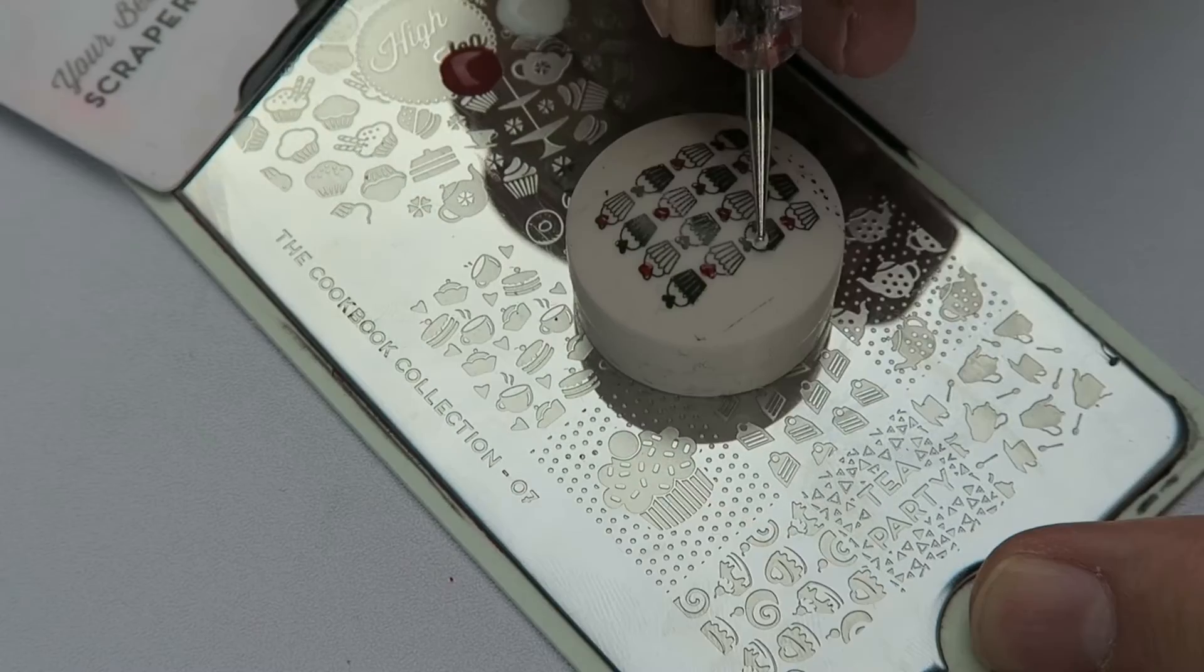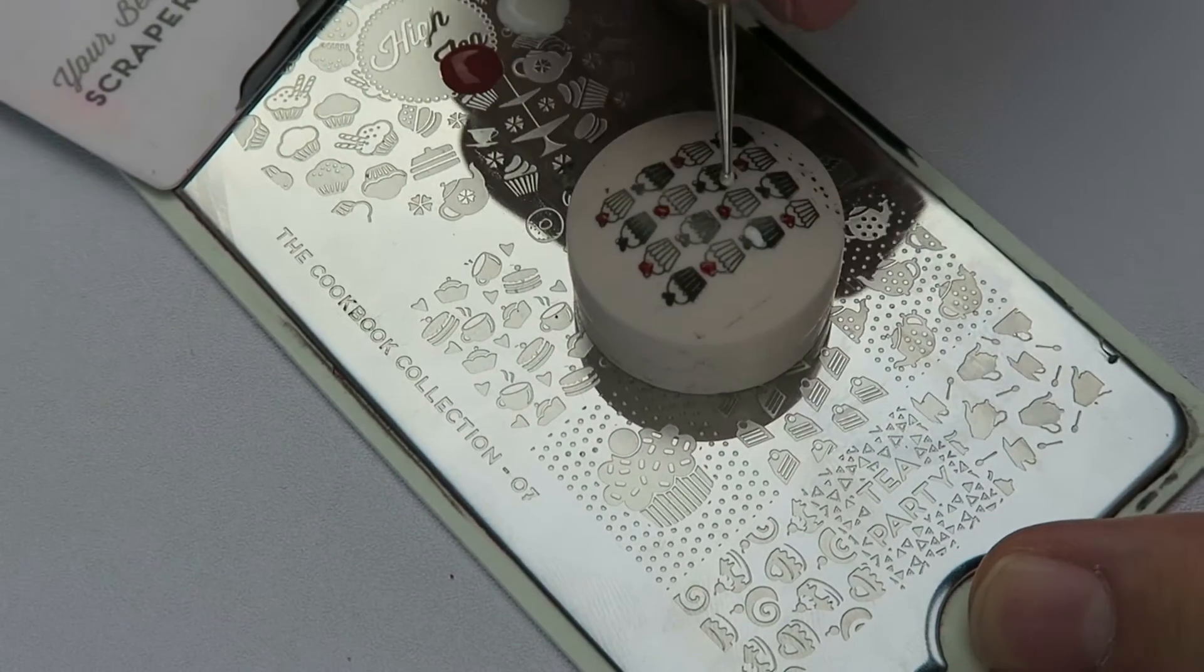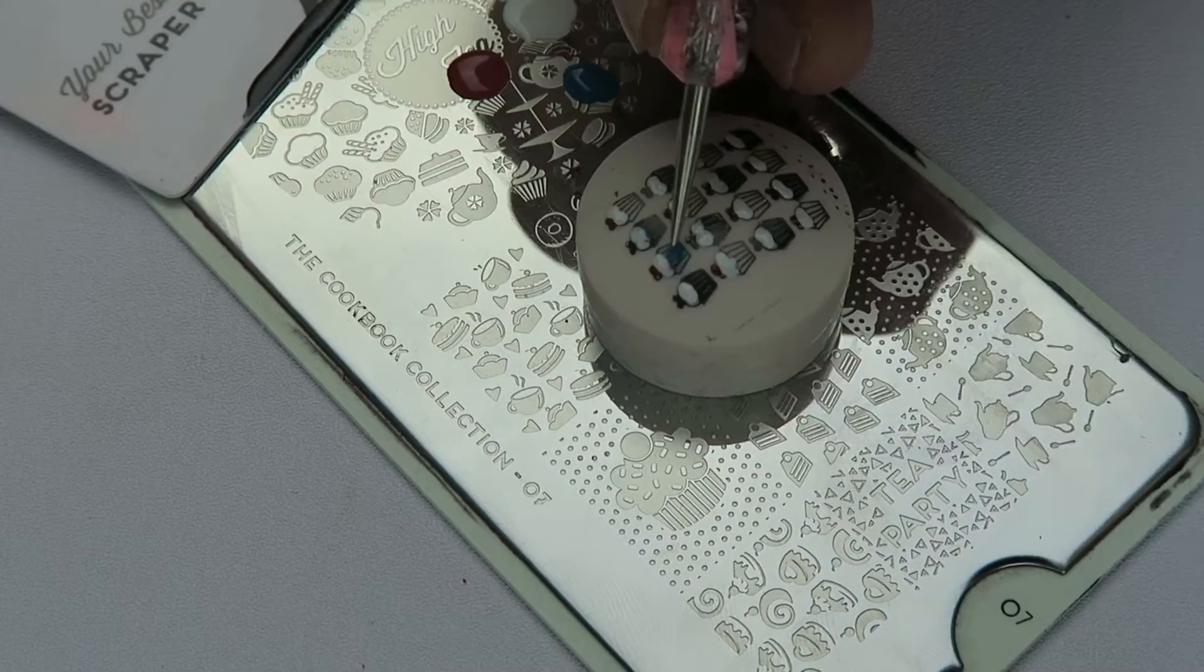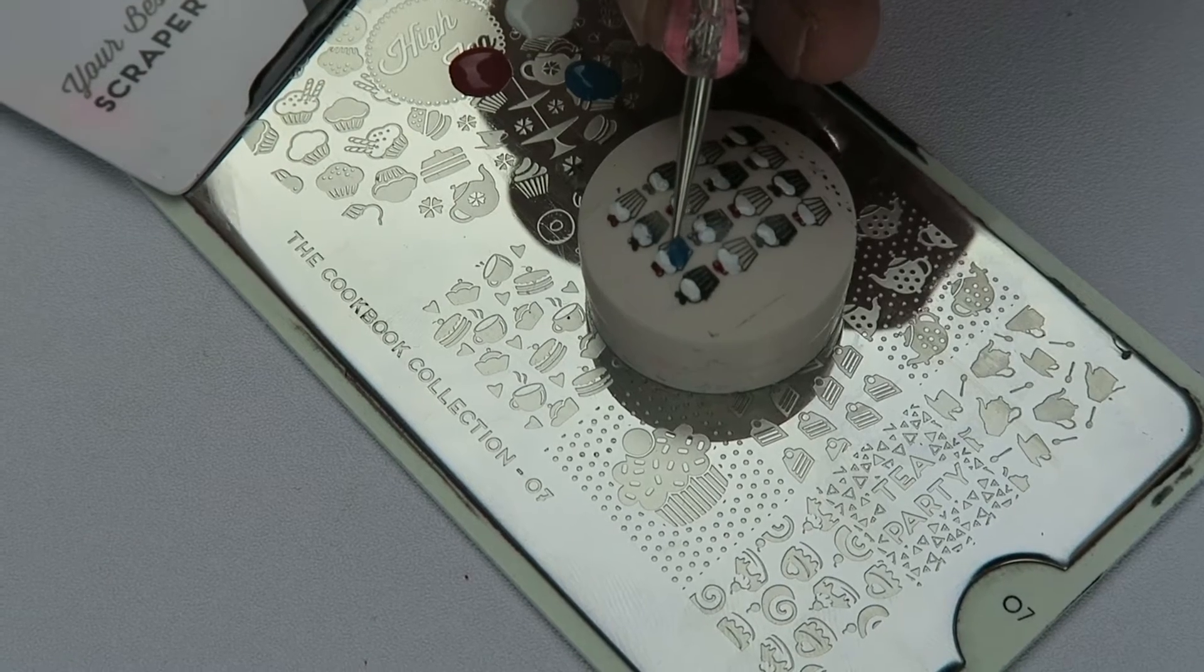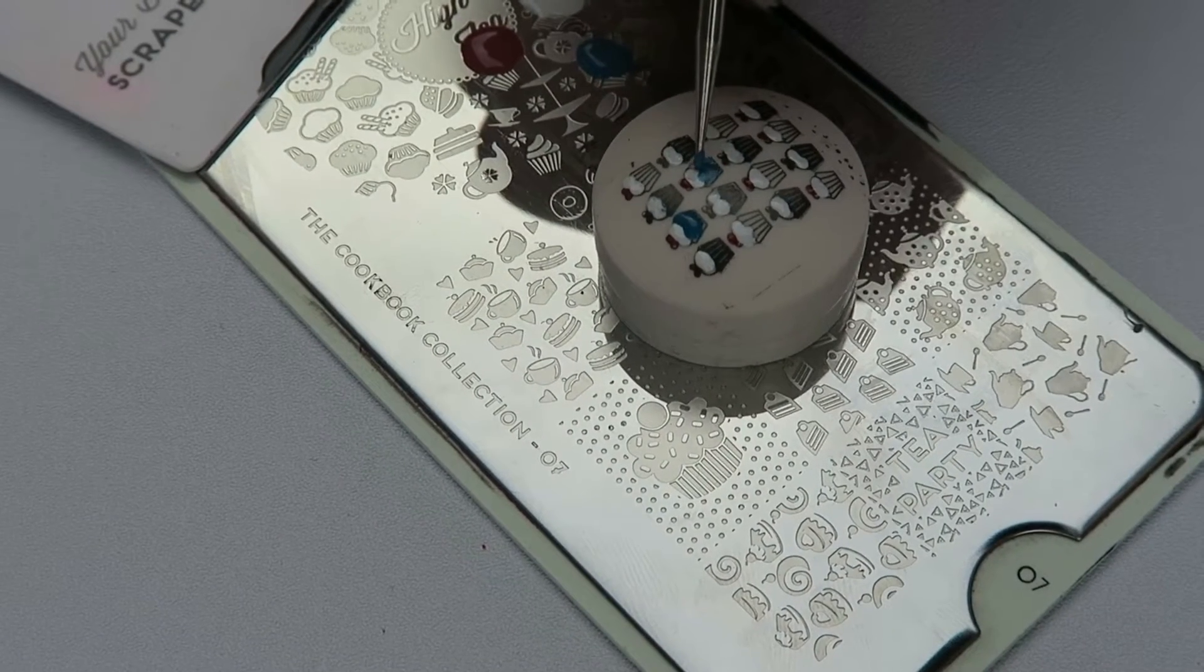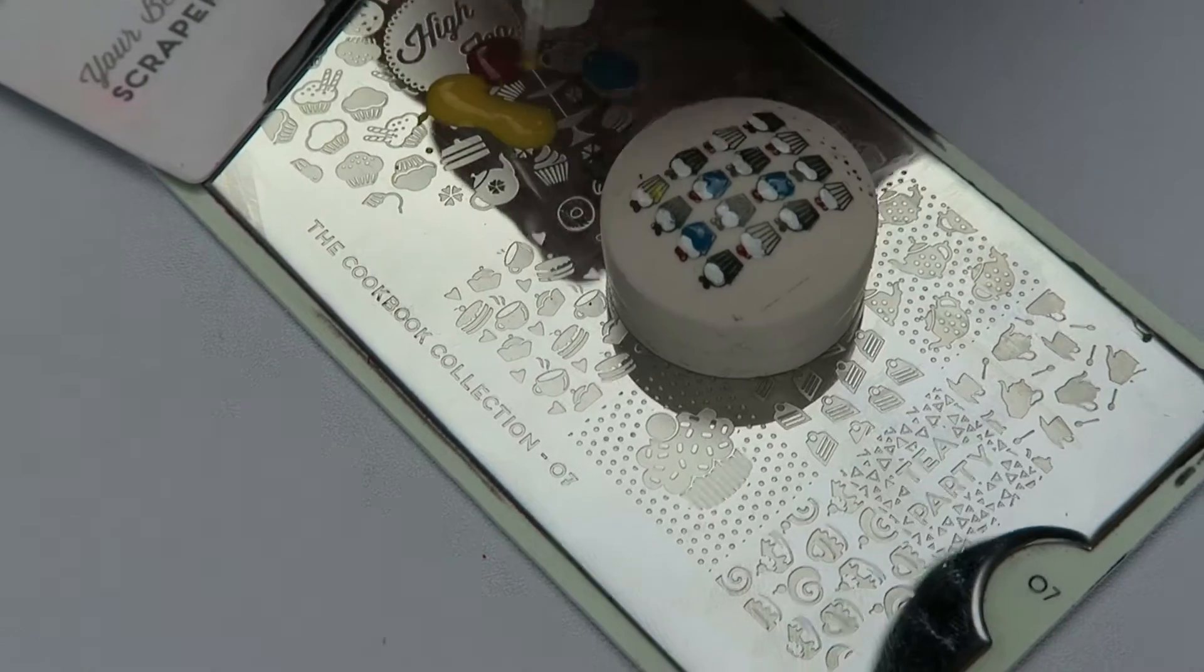Now we are going to be using a red for the heart on top of the cupcake and then a white for the icing. Now we are going to be coloring in the cases, first off using a blue.